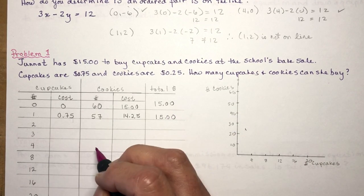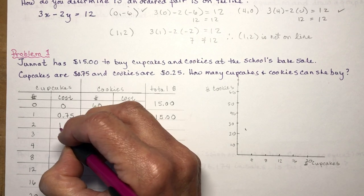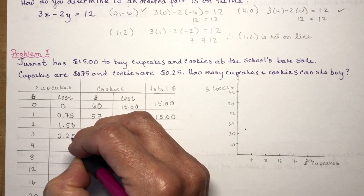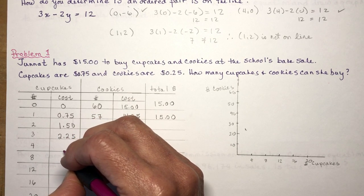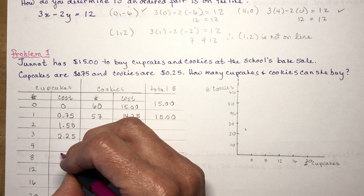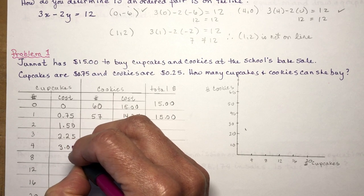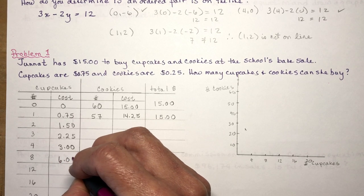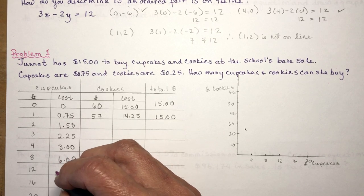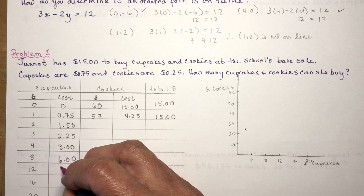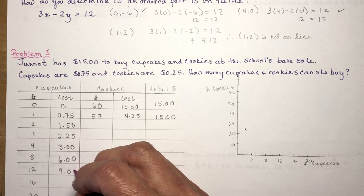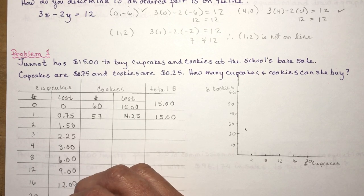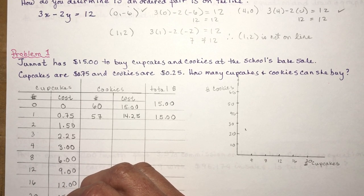So let's say she only buys a cupcake for herself and cookies for everybody else. If she buys one cupcake, that's going to cost her 75 cents and she's left with $14.25. So I'm subtracting 15 minus 0.75 equals 14.25 and divide it by 0.25 and I get 57. You can go on with this. Two cupcakes is $1.50, three cupcakes $2.25, four cupcakes is $3.00, eight cupcakes is $6.00, twelve cupcakes is $9.00, sixteen is $12.00, and twenty is $15.00.